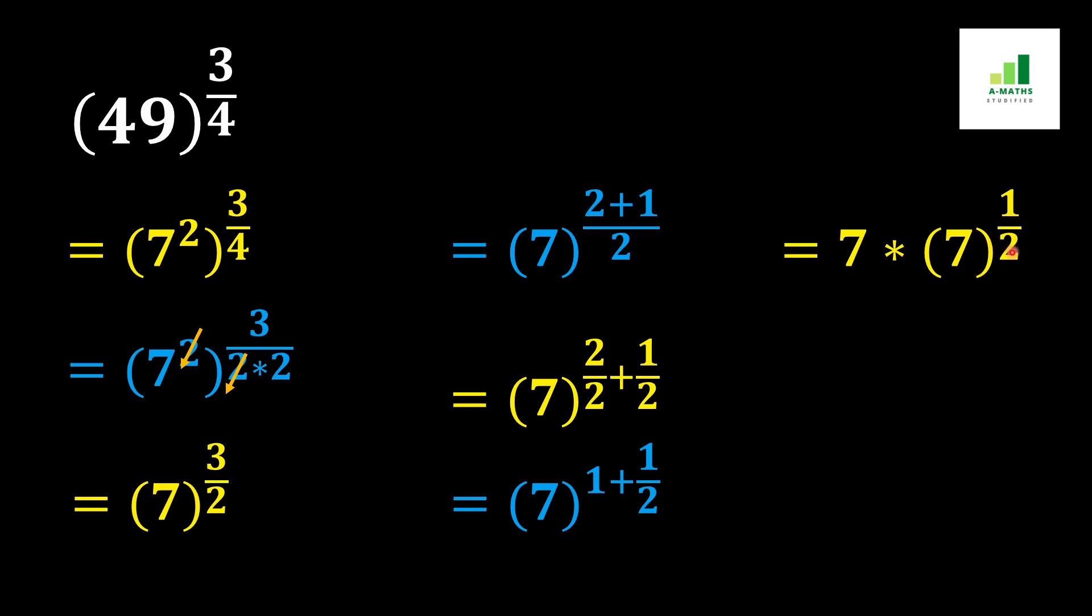Now in the next step we can write as 7, and this 7 to the power 1 over 2 can be written as under root 7, and this is the simplification form of this value.